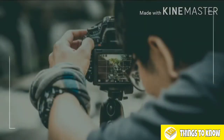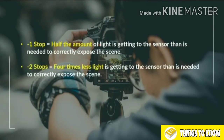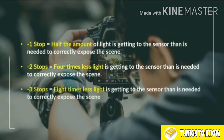To review our minus stops: minus 1 stop is half the amount of light getting to the camera sensor than is needed to correctly expose the scene. Minus 2 stops is four times less light than is needed to get the correct exposure. And minus 3 stops is eight times less light now coming into the scene — eight times less light getting to the camera sensor than is needed to correctly expose the scene.